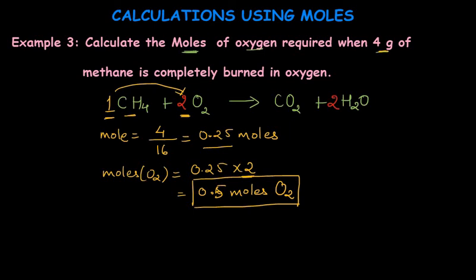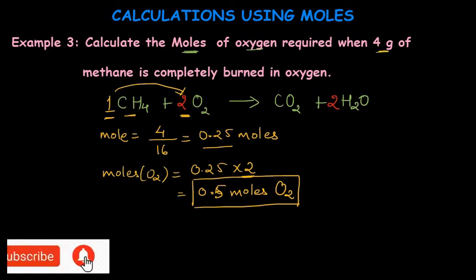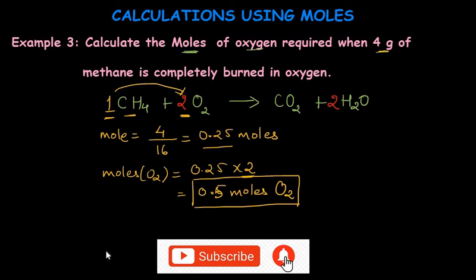We have seen two methods for calculations from equations: we can calculate the mass of any reactant required or product formed, or we can calculate the moles of any reactant or product when the equation and amount of one reactant is known. This is what stoichiometry enables us to do. In future videos we will see more calculations of this type. If you found this helpful, please subscribe and check out my earlier videos.